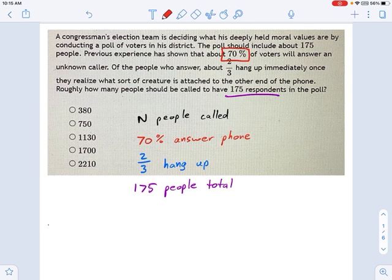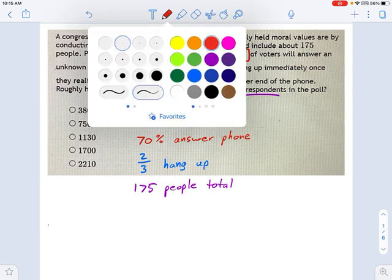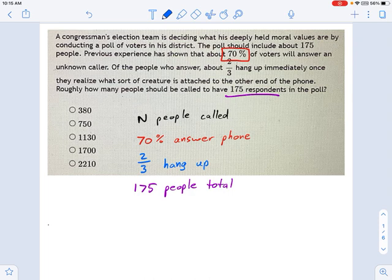And of the people who do pick up the phone, as soon as they realize they're talking to a congressperson or his election team, two-thirds of those hang up justifiably. So we've got really a lot of people who are not going to talk to this election team. And we have to figure out how many calls they need to make.